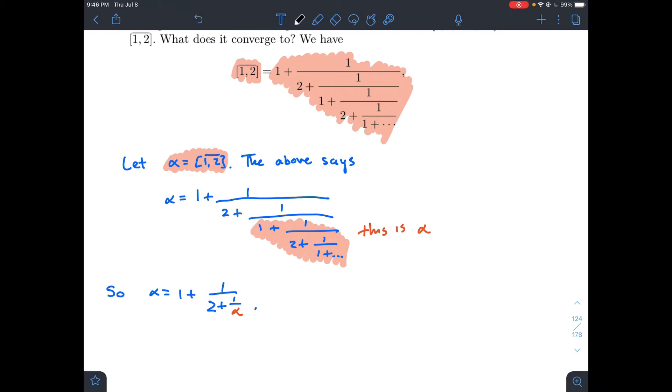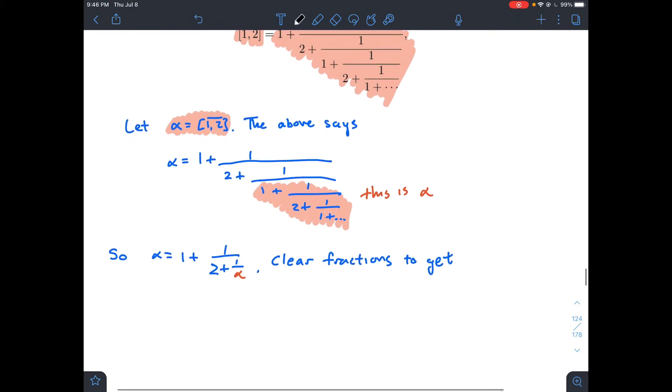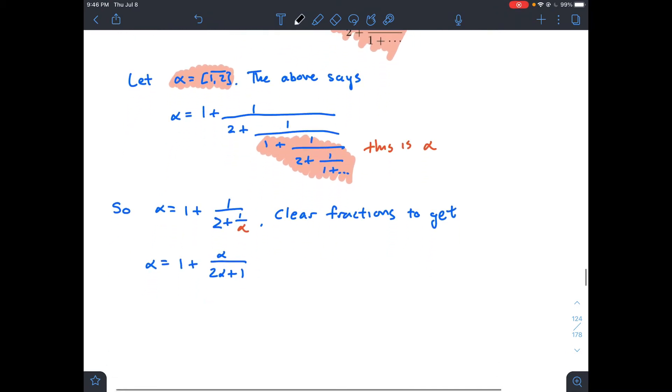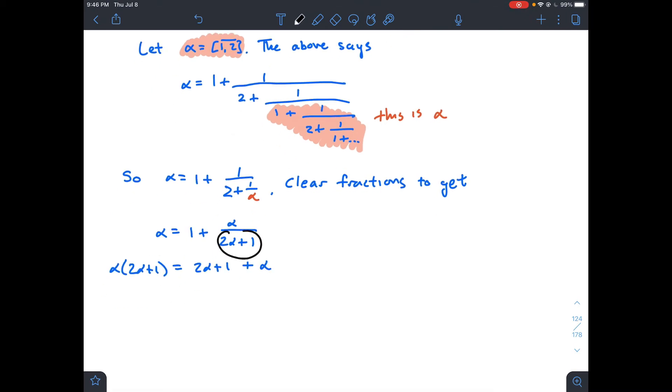The way we're going to go about it, I'll show some steps. We'll clear fractions. What am I going to do? I'm going to multiply the top and bottom by alpha and distribute. That's how I got 2 alpha plus 1 downstairs and an alpha upstairs in the next line.